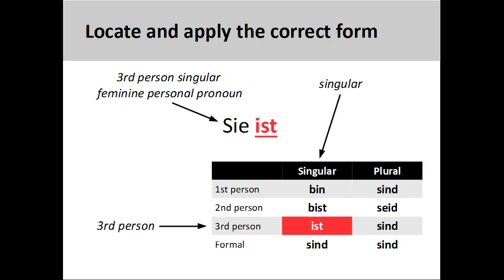Although it may be difficult to memorize the four principal parts of irregular and strong verbs, with repeated practice you will begin to notice patterns that will help you. The main thing is not to give up and to keep trying.